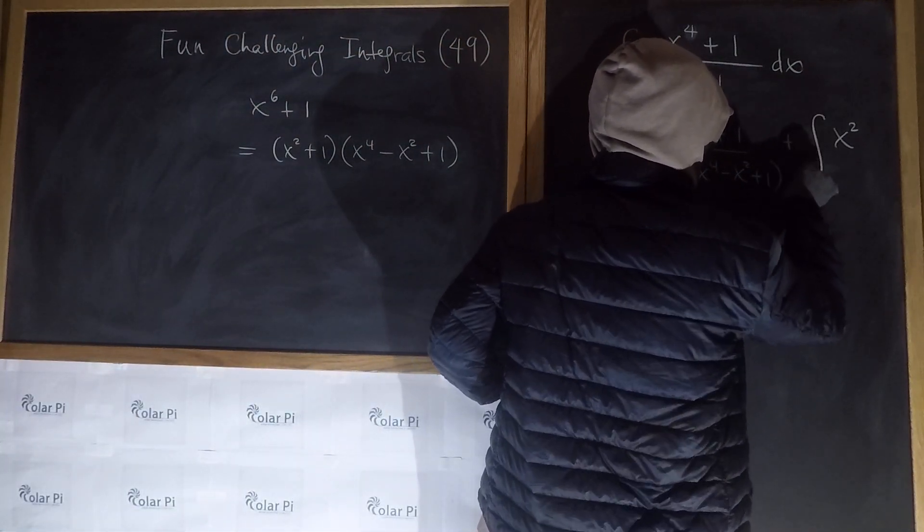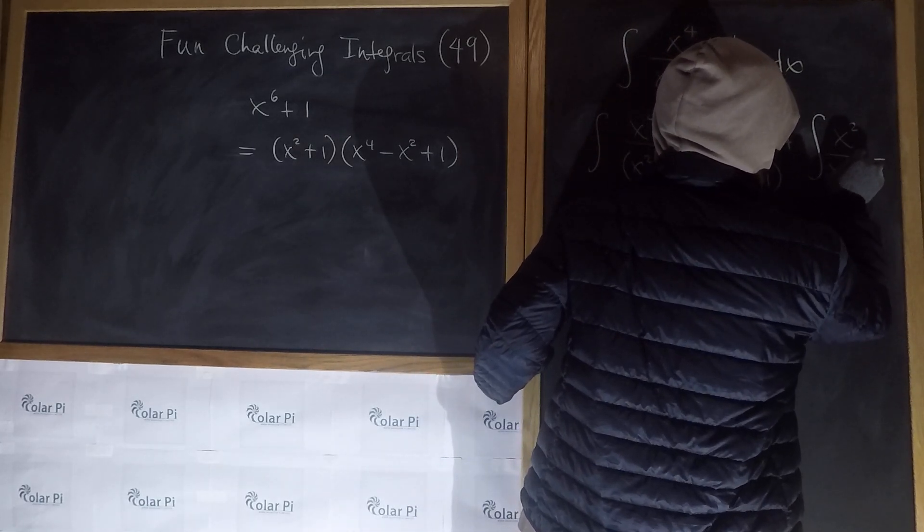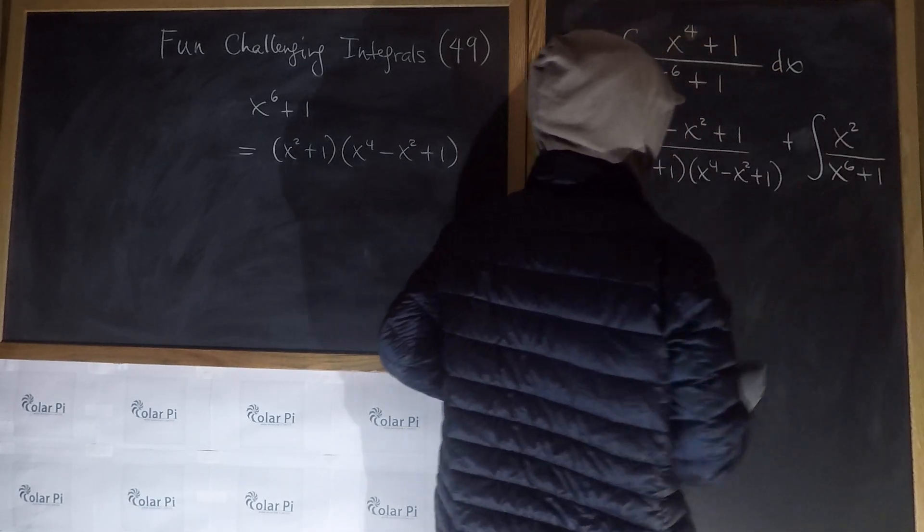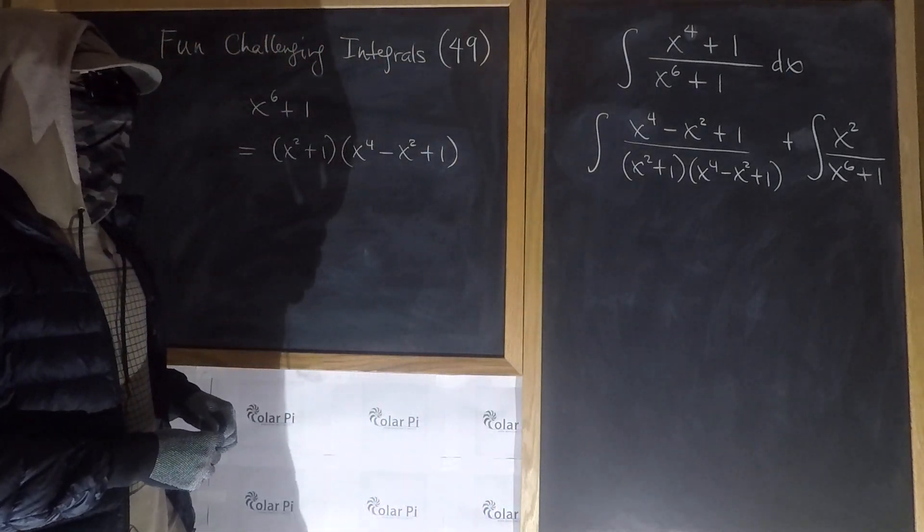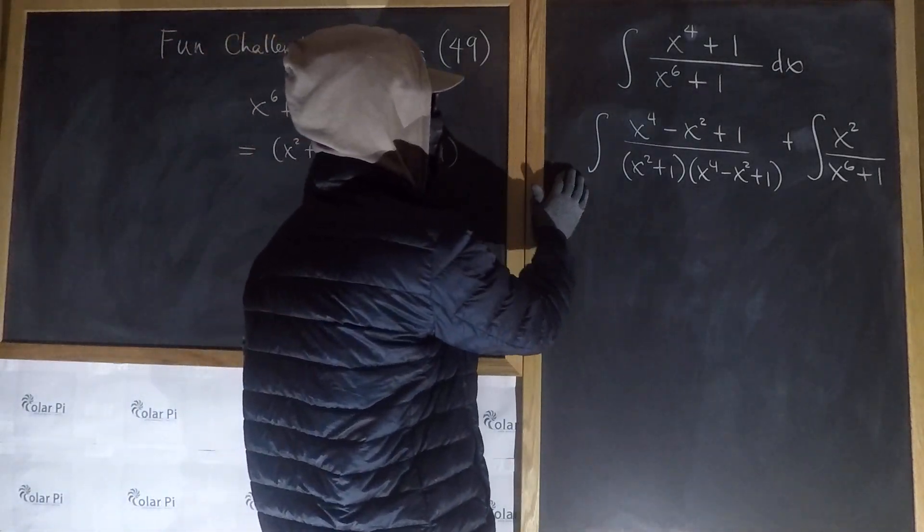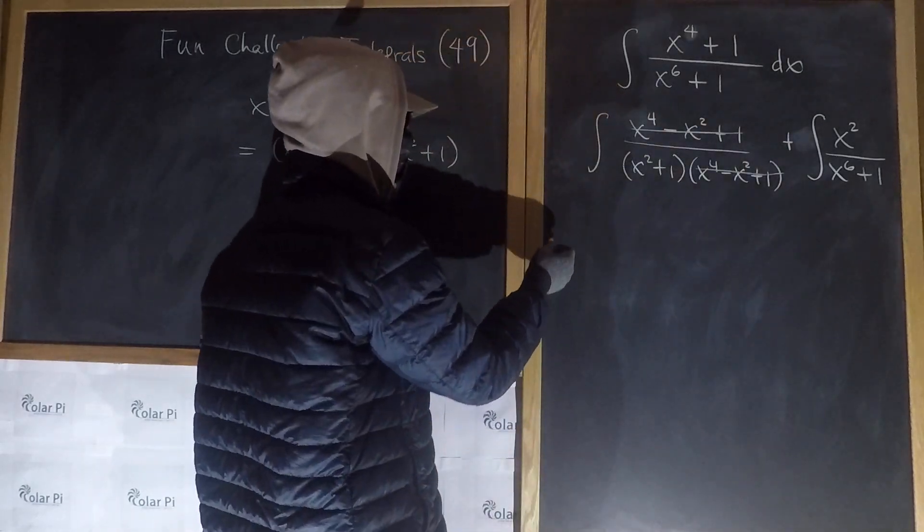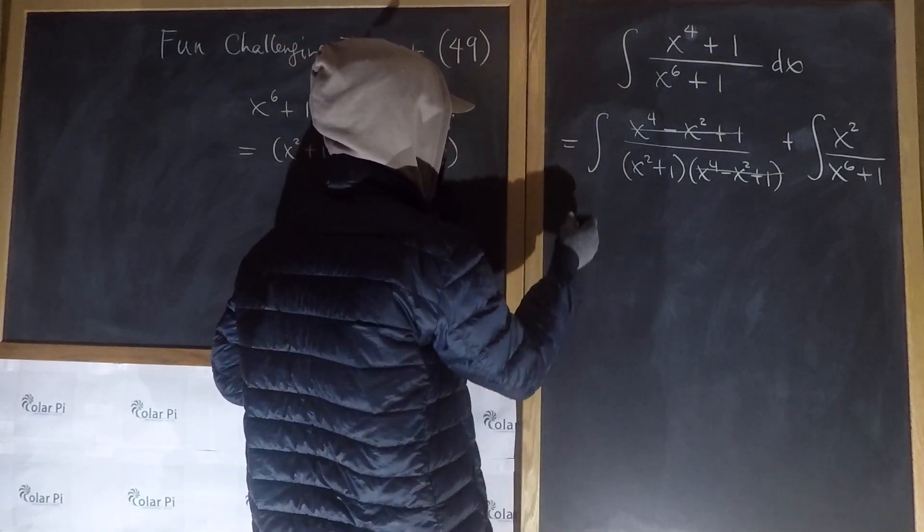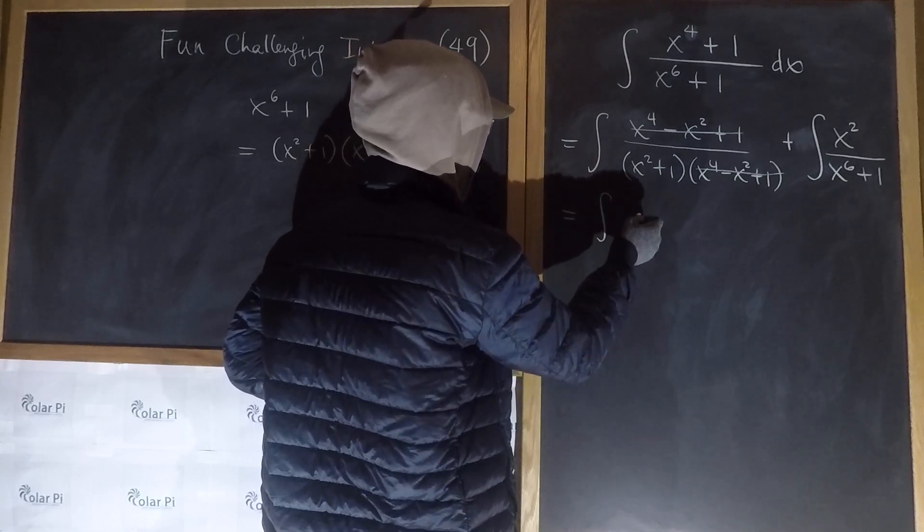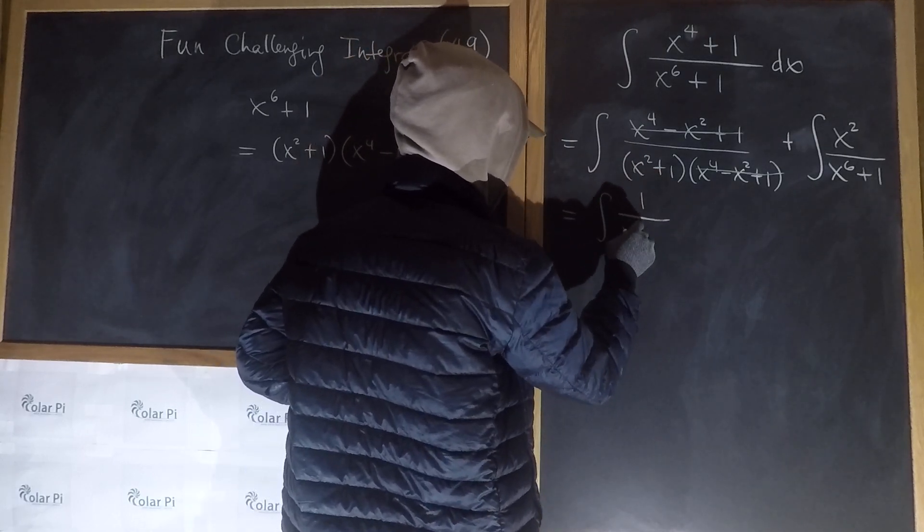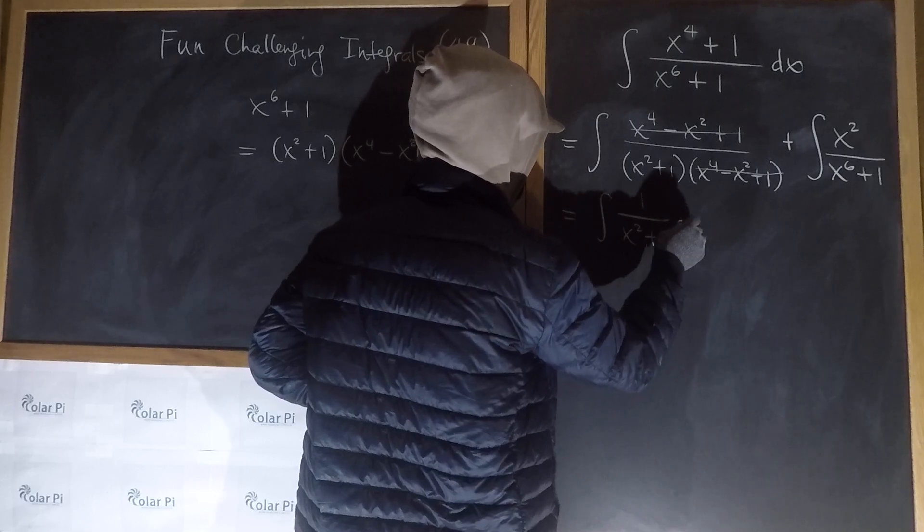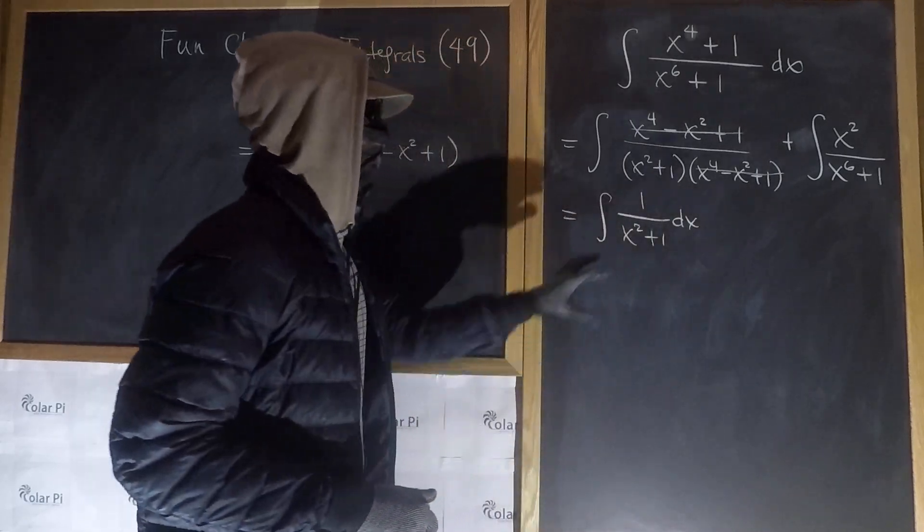And so the second integral is after the plus sign. And so we go like this, and then divide by x to the 6th plus 1. Now notice that here in the first integral we could do this. So we have that the original integral is the same as 1 over x squared plus 1 dx for this first guy.